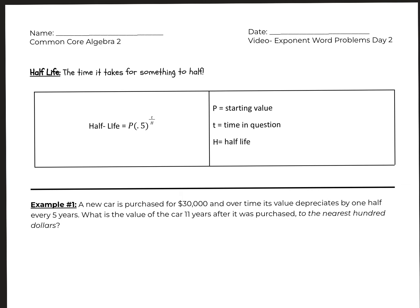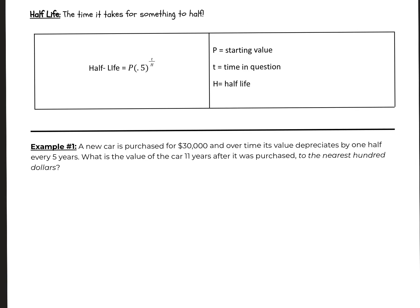You may recognize these from science, so half-life is the time it takes for something to half. Here's the formula: half-life equals P times 0.5 to the t over H. t is the time in question, P is the starting value, and H is the half-life. So let's see if we can try example number one.